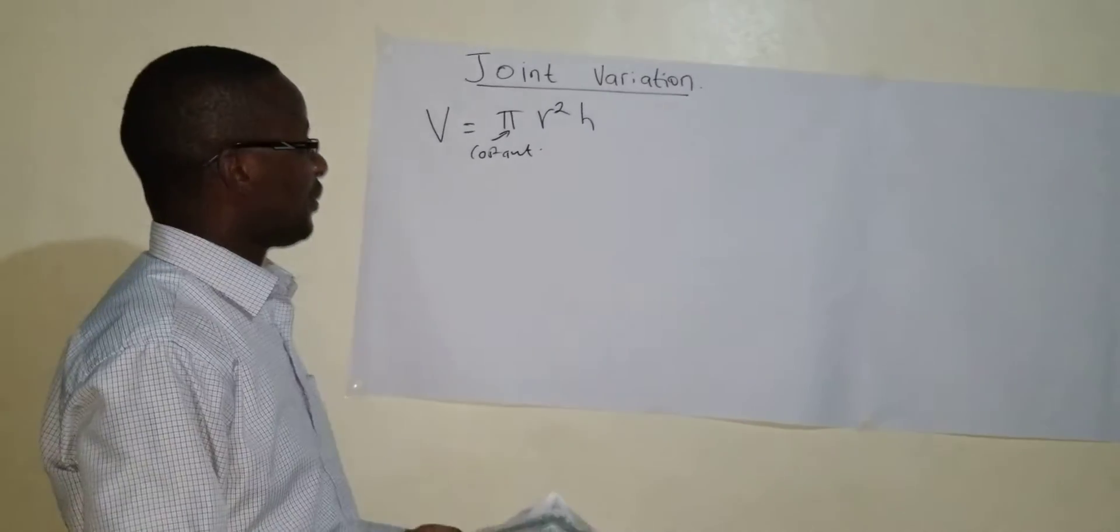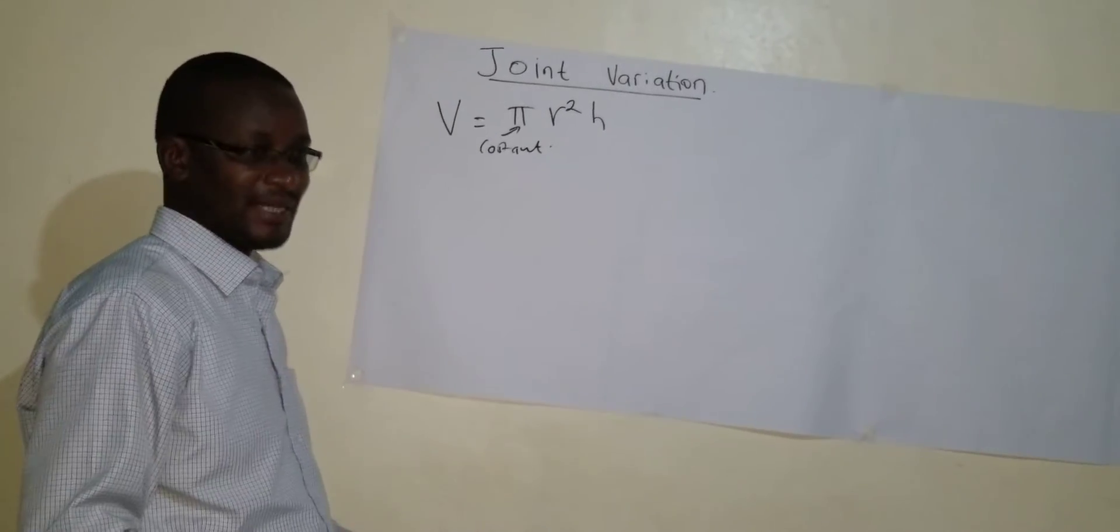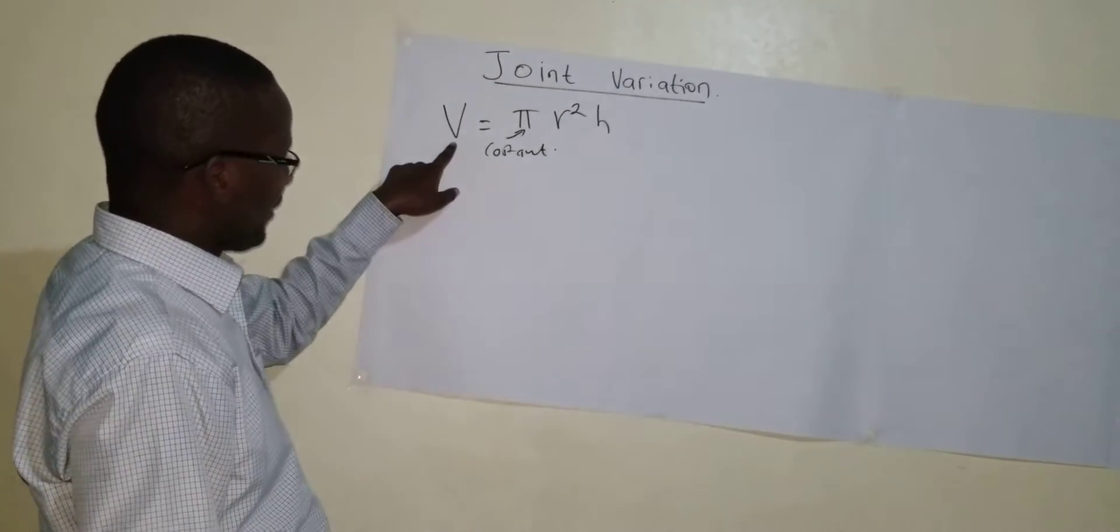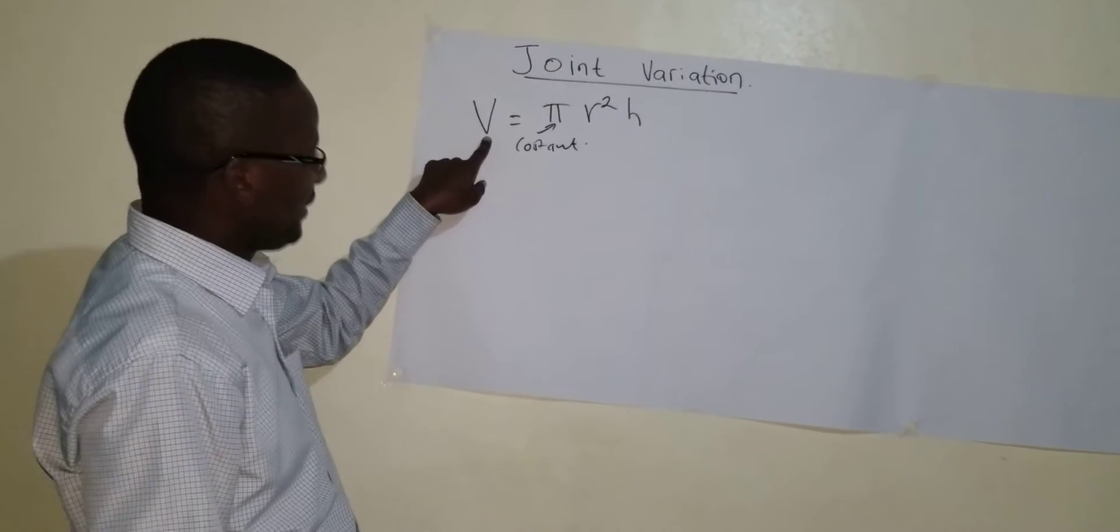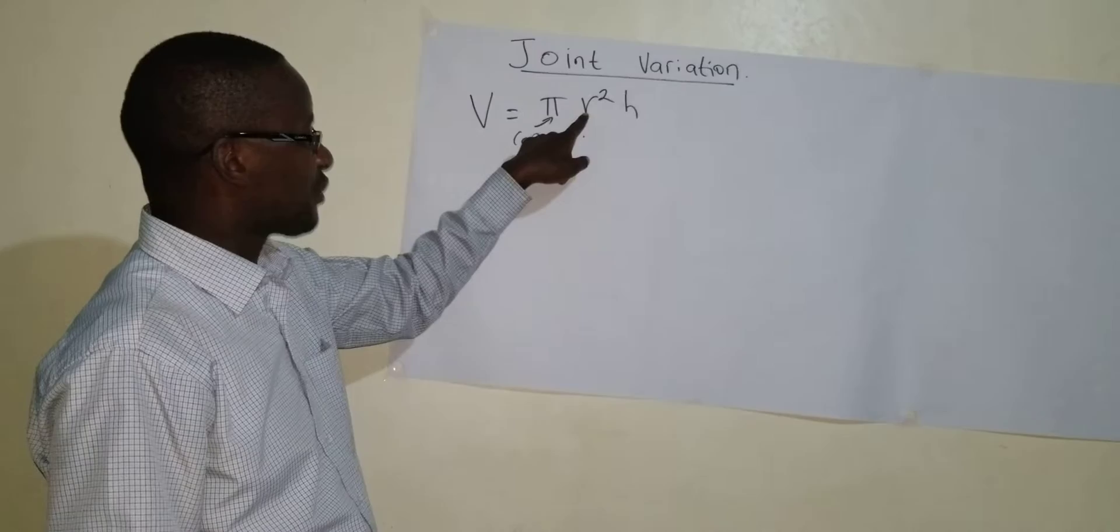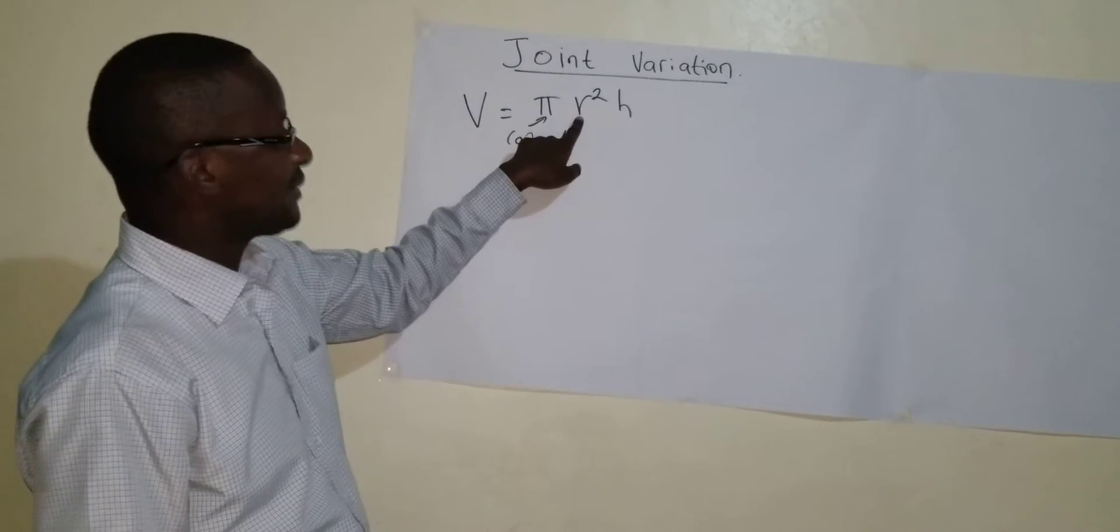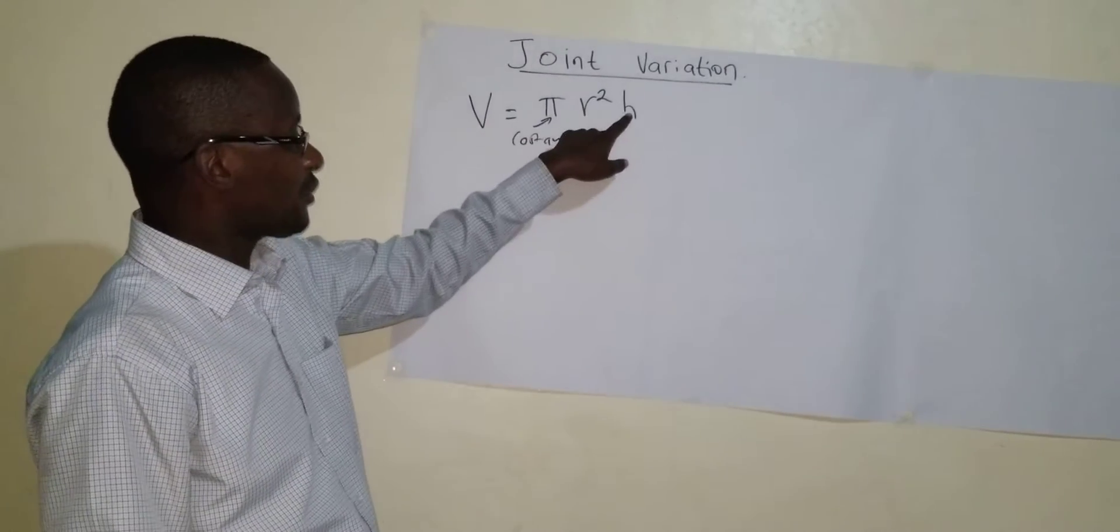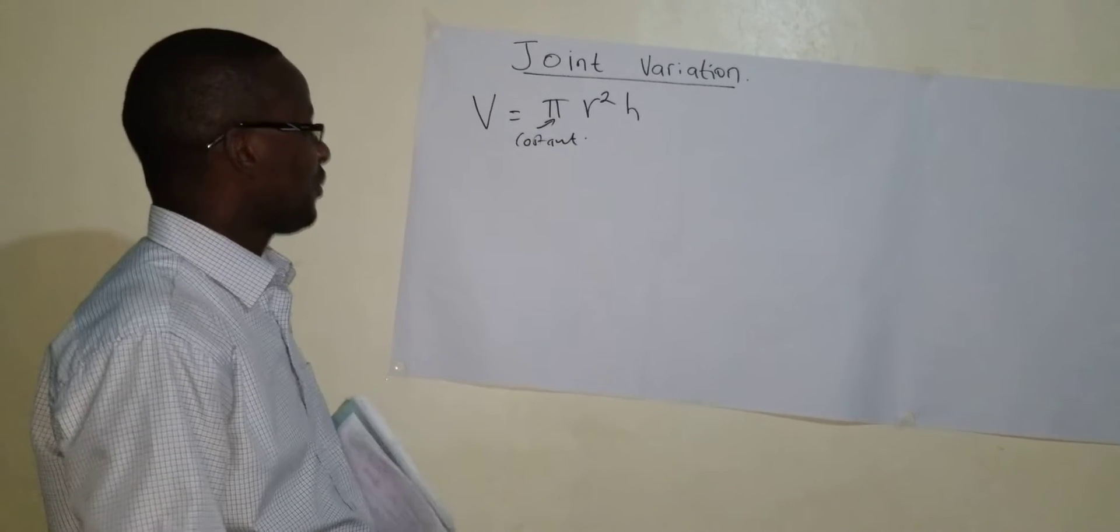So here we can simply say that the volume of a cylinder V varies as the square of R, that is the radius, and also the height.